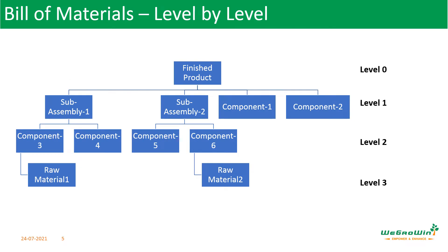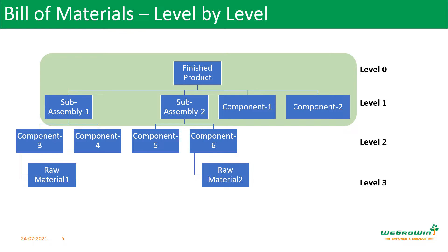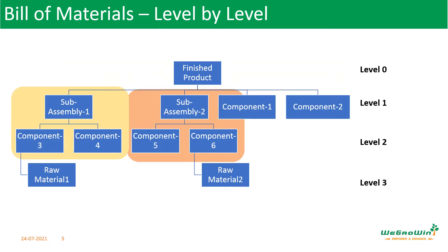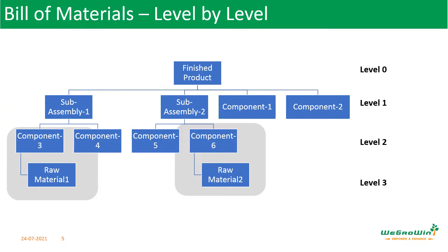What is level-by-level BOM? To produce the finished product, we see the first level BOM: sub-assembly 1, sub-assembly 2, component 1, and component 2. Then we want to see the BOM for sub-assembly 1 and sub-assembly 2 — that is the next level. This is what level-by-level means: we are seeing level 2 BOM. Then to produce component 3 and component 6, we go to the next level. We see the bill of materials step by step — for each level, what components are required — giving a hierarchical structure useful for analyzing BOM components, critical points, and critical work centers.